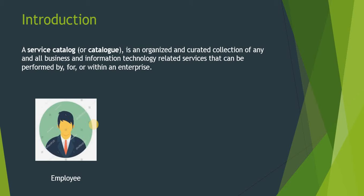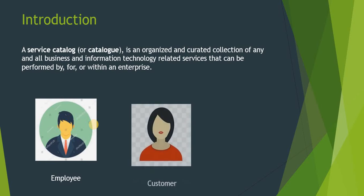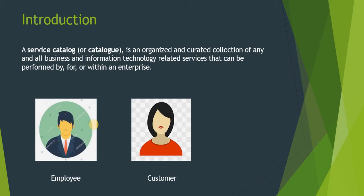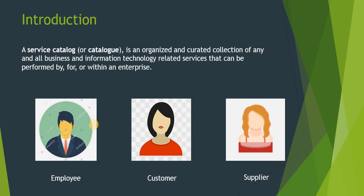Service catalog is available for employees of the organization — they can request new laptops, new mobile phones, or maybe new reports. It is also present for customers if an organization wants to display what products they have, or if any customer has an enquiry they can do it through the service catalog. Even for suppliers, there can be multiple catalog items, for example to raise a case, raise an incident, or request some item from the organization.